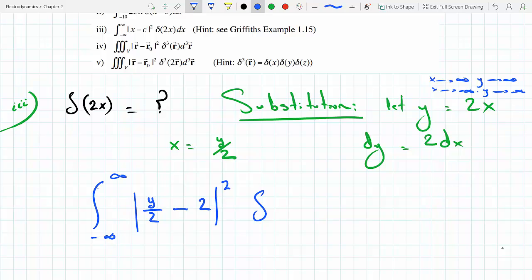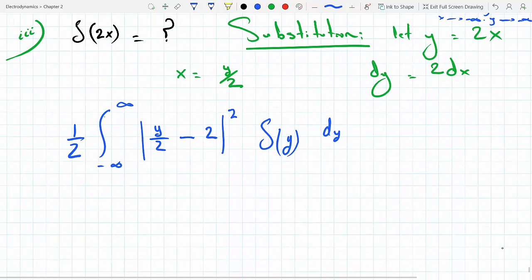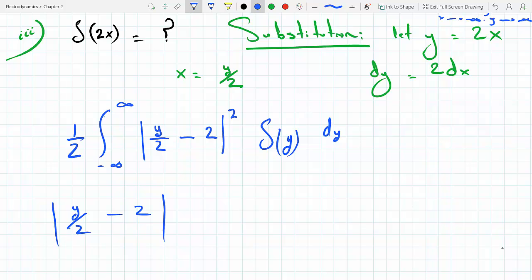Then Delta y, and dx is just dy over 2, so I'm gonna pull the half out. Now here's where you have to split the integral because y over 2 minus 2 absolute value will...